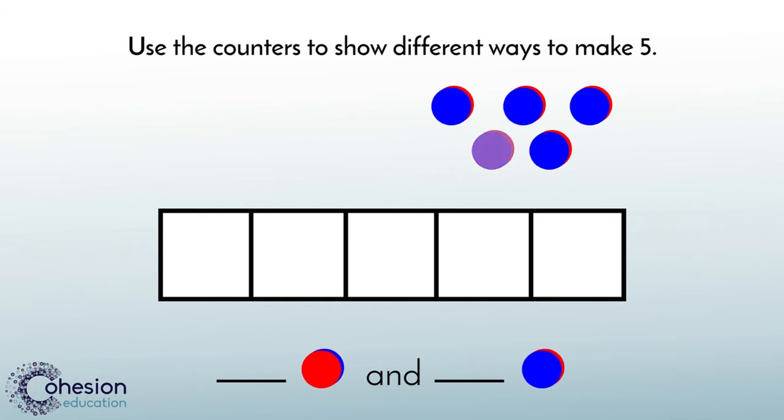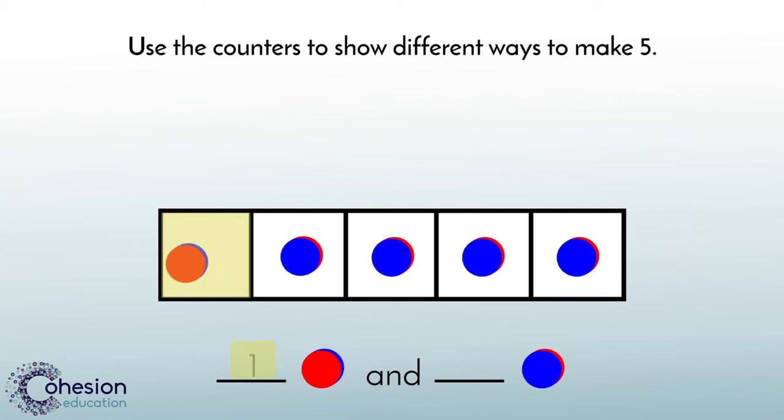Let's start by placing one red counter in the five frame. The rest of the five frame can be filled with blue counters. Students should record one red counter and four blue counters. This shows one way to make the number five using our red and blue counters.